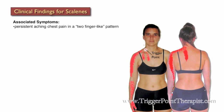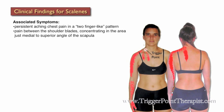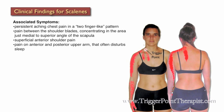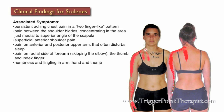Symptoms associated with trigger points in the scalene muscles include persistent aching chest pain in a two finger-like pattern, pain between the shoulder blades that concentrates in the area just medial to the superior angle of the scapula, superficial anterior shoulder pain, pain on the anterior and posterior part of the upper arm that often disturbs their sleep, pain on the radial side of the forearm that skips the elbow and travels down the thumb into the index finger, numbness and tingling in the arm, hand, and the thumb, and edema or puffiness in the hand, especially in the morning.